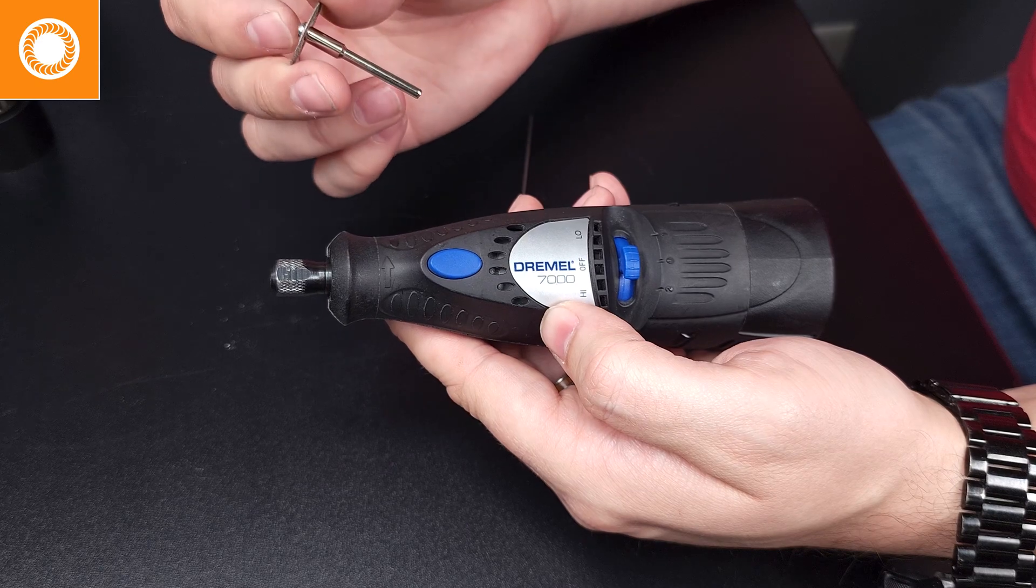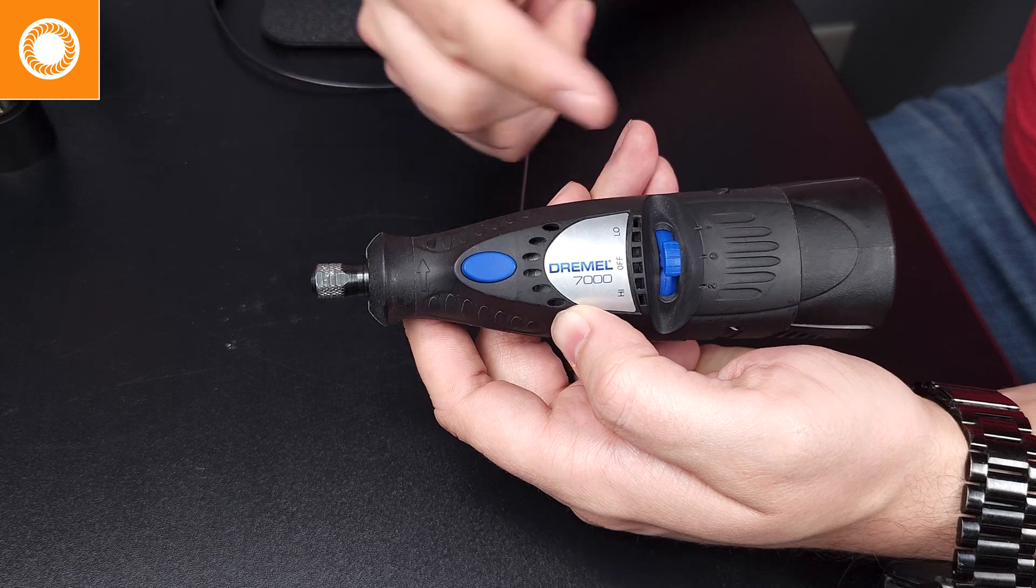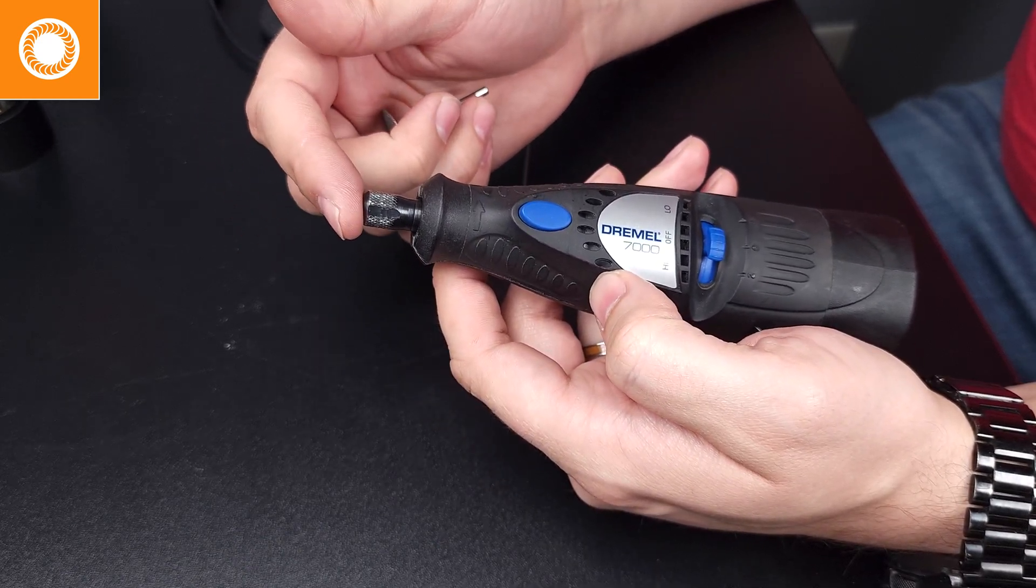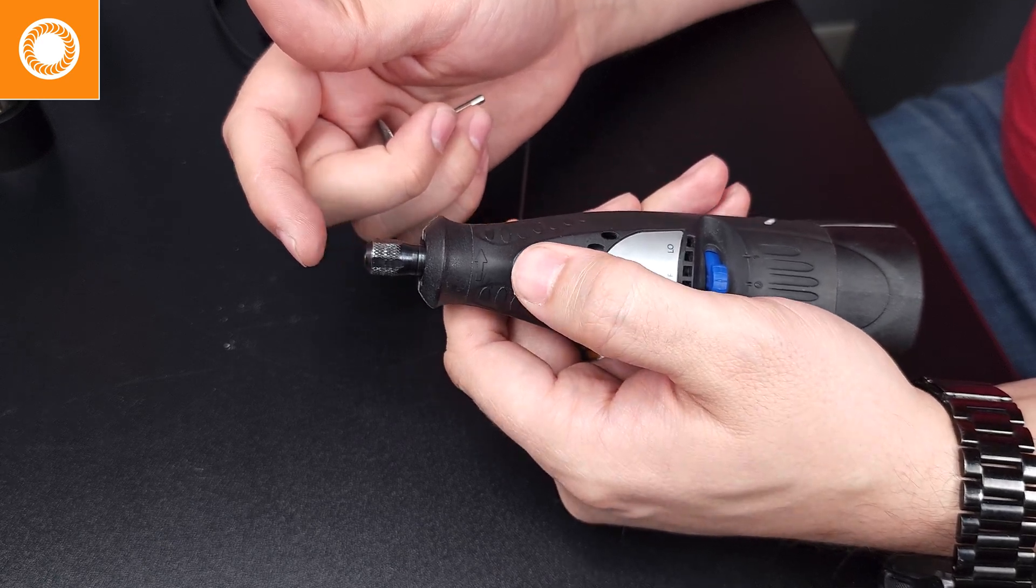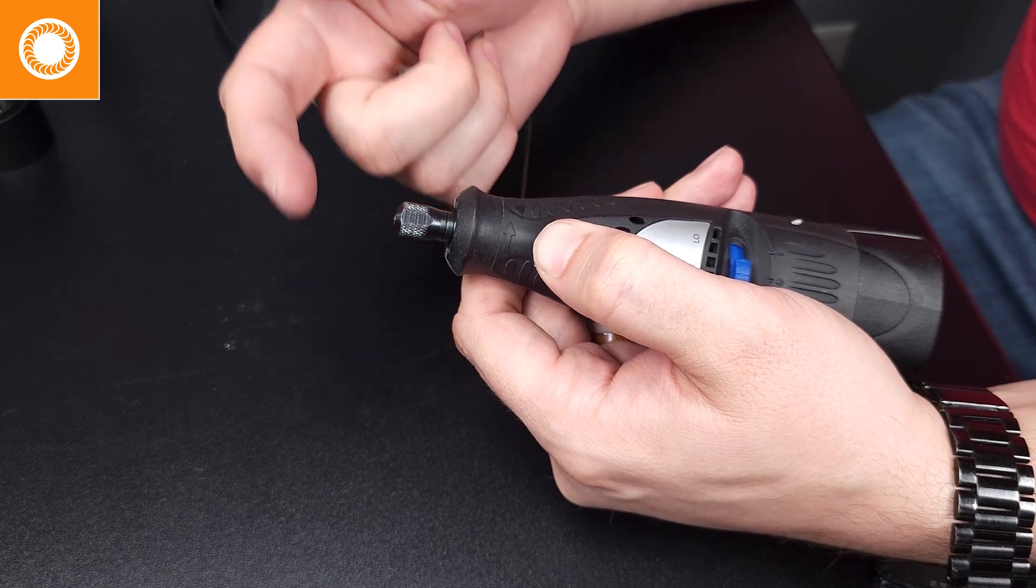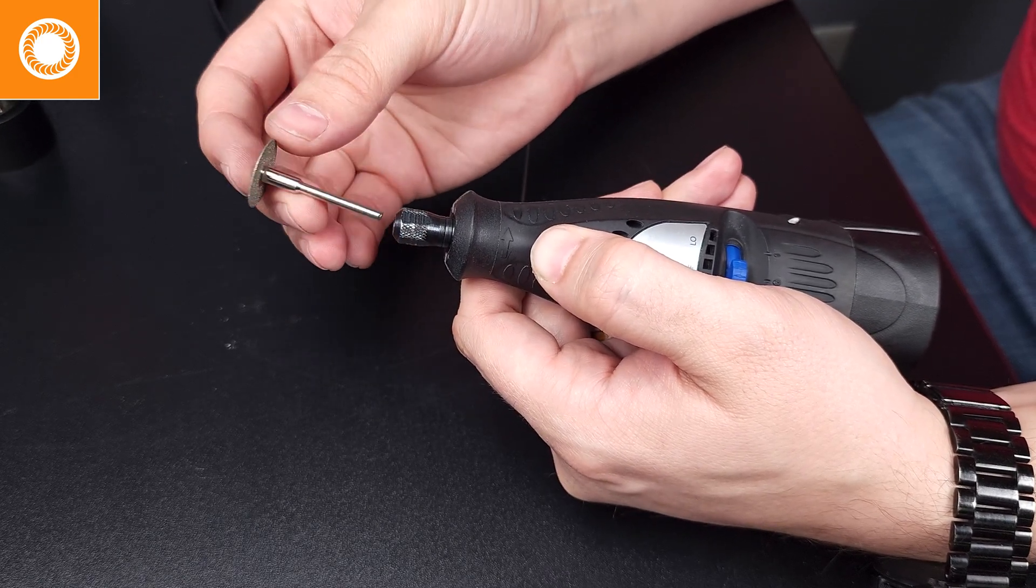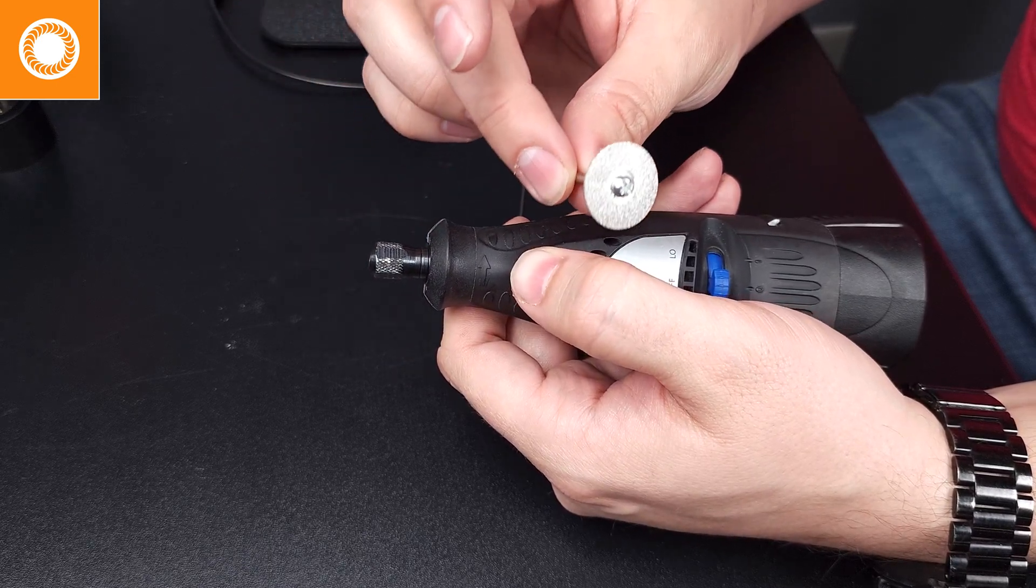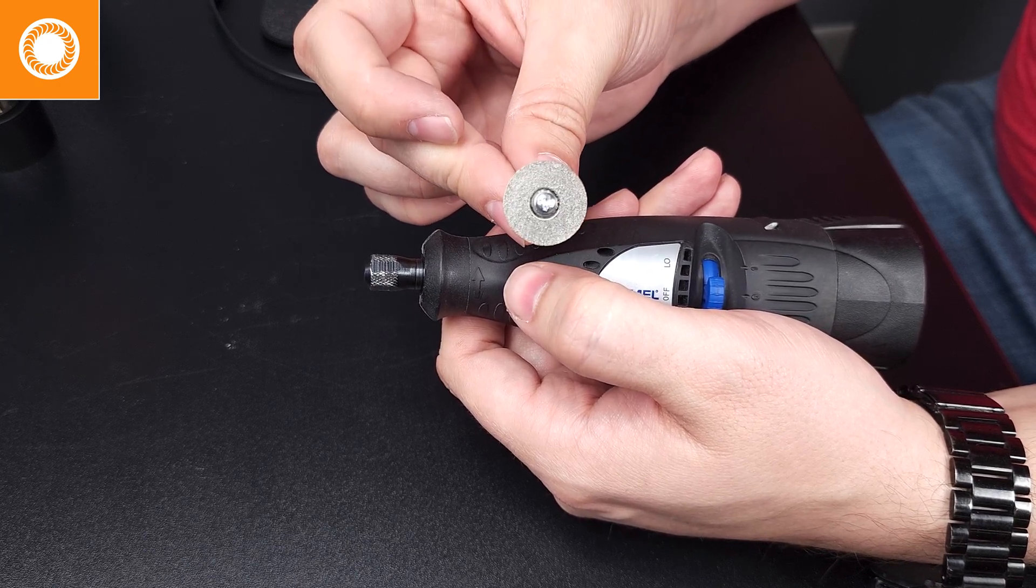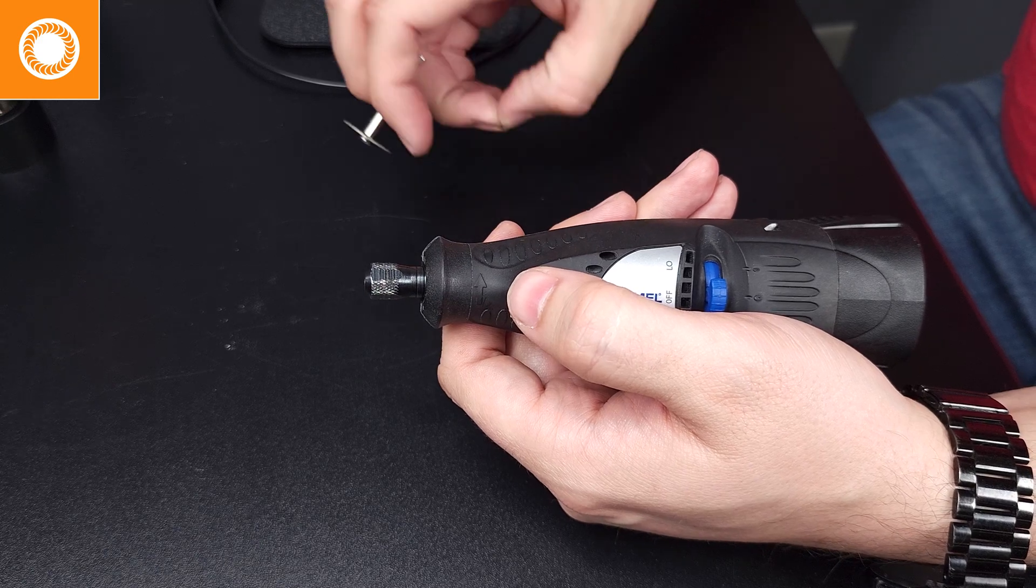We're going to be going over the setup for the Dremel tool. Now, it's going to come in just like this with a few other accessories. What we want to do is loosen up this side by pushing that button. And then we can twist it counterclockwise or lefty-loosey. Then we want to slide in the attached diamond disk. This would have come with your machine in a vial that contained spare electrodes.